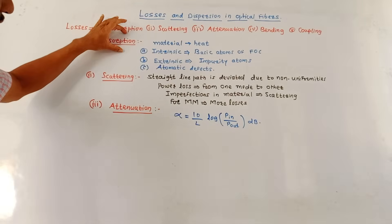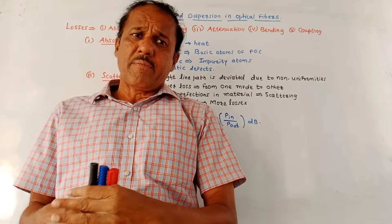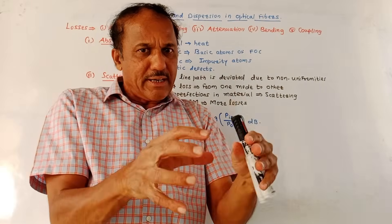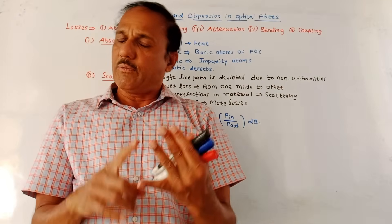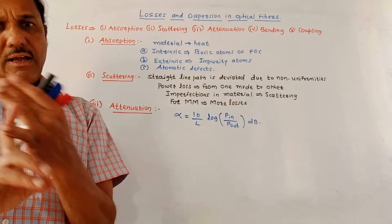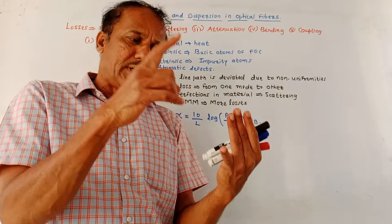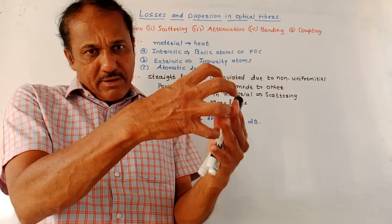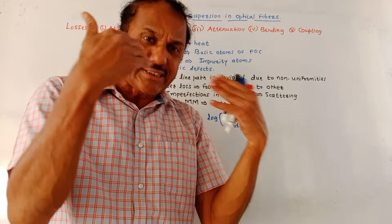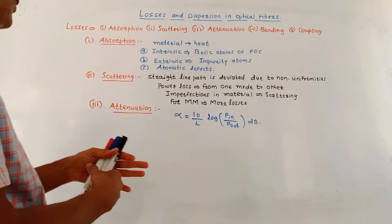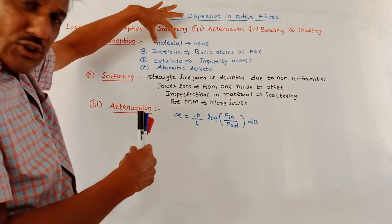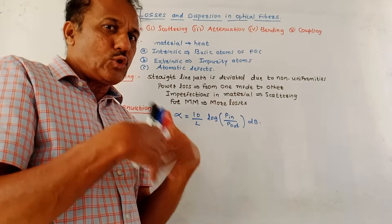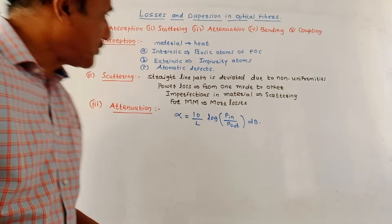First, let us talk about the absorption loss. As the name indicates, this is due to the absorption of light rays by the material which is used to manufacture the fiber optic cable. We know that fiber optic cables are produced using glass or plastic material. A certain amount of light rays may be absorbed by such materials, producing heat — this is the absorption loss.